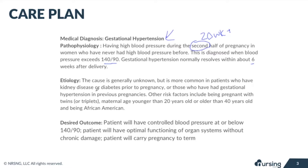The cause is a little unknown, but there are definitely things that put a patient more at risk. If the patient already has kidney disease or diabetes prior to pregnancy, they'll be more at risk. Also, if they've had gestational hypertension in a previous pregnancy, they're more at risk to have it again. Other risk factors include carrying multiples — you have extra volume and weight. Being younger than 20 or older than 40, and being African-American are also risk factors.